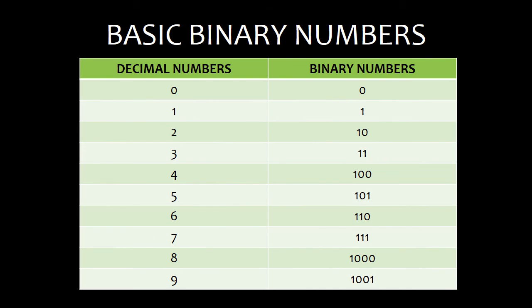Here are some basic binary numbers. Decimal 0 equals binary 0, decimal 1 equals binary 1, and decimal 2 equals binary 10, and so on.